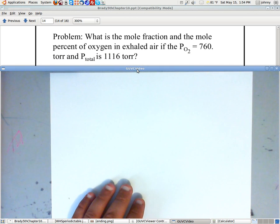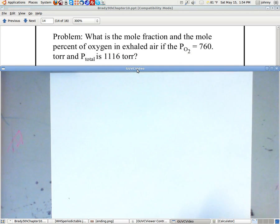Alright, here it says: what is the mole fraction and the mole percent of oxygen in exhaled air if the partial pressure of oxygen, the PO2, is 760 torr, and they then tell us that the total pressure Ptotal is 1,116 torr? Well, let's go ahead and get this started.